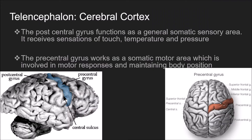There are many functions of the cerebral cortex. The postcentral gyrus functions as a general somatic sensory area and receives sensations of touch, temperature, and pressure. The precentral gyrus works as a somatic motor area which is involved in motor responses and maintaining body position. Hence, different areas of the cortex have important sensory functions to perform.